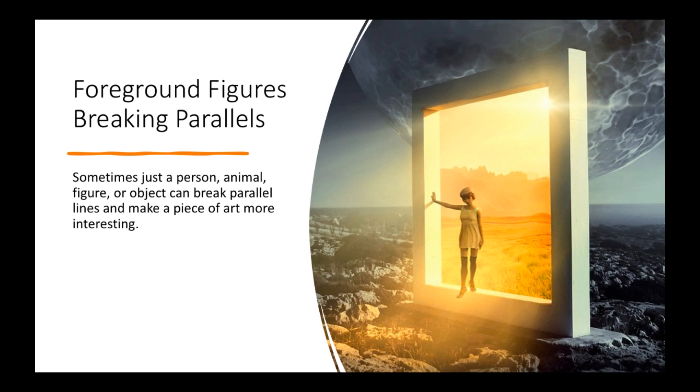Sometimes foreground figures are breaking parallels as well. Sometimes just a person or an animal or a figure or an object can break parallel lines and make a piece of art more interesting. So here you have these parallel lines that are in perspective. You have these parallel lines that are going up and down vertically. And then you have this person who just kind of breaks across from it.